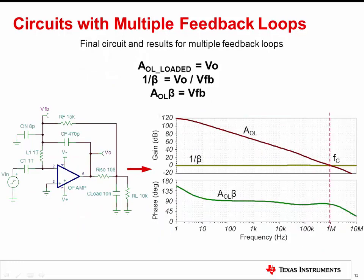Breaking the loop at the input requires different equations to obtain the open loop results. The equations for generating the desired curves are as follows: loaded AOL equals VO; 1 over beta equals VO divided by VFB; and loop gain equals VFB. The procedure for determining the rate of closure and measuring the phase margin is the same as before.